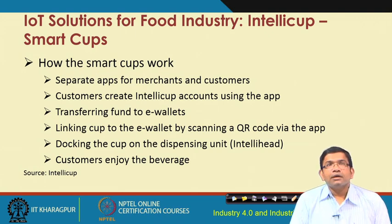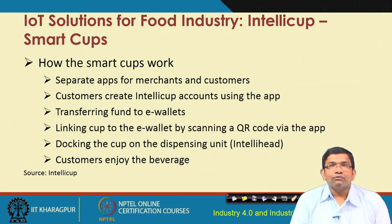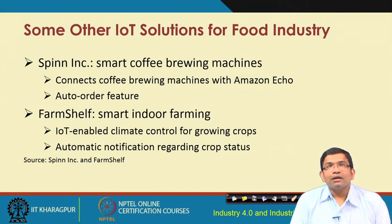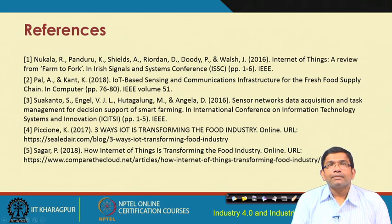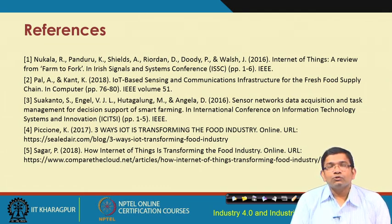The smart cup works as follows: there are separate apps for merchants and customers. Customers create IntelliCup accounts using the app, transfer funds to e-wallets, and then cups are linked to the e-wallet by scanning a QR code via the app and docking the cup on the dispensing unit using the IntelliHead. Customers then enjoy the beverage produced. Likewise, there are other IoT solutions for the food industry, such as Spin Ink for smart coffee brewing and Farm Shelf for smart indoor farming. These are listed in the references for further reading.